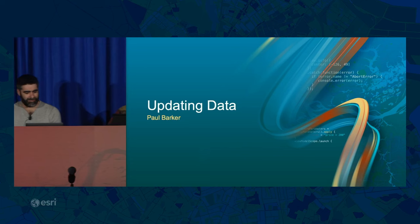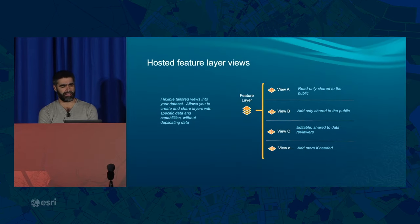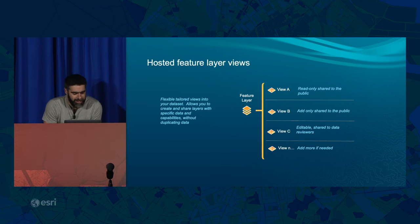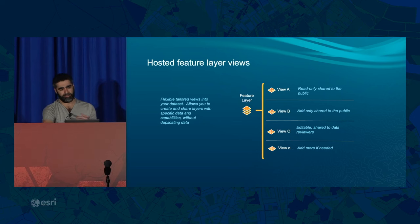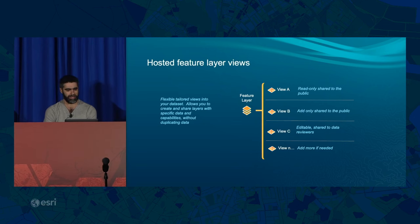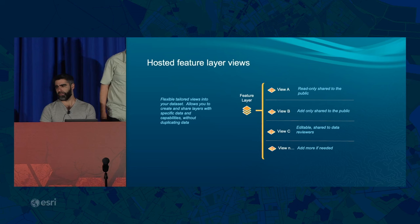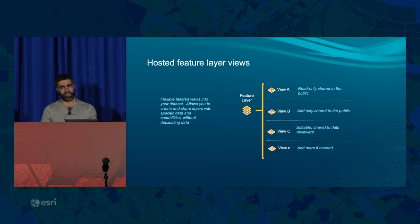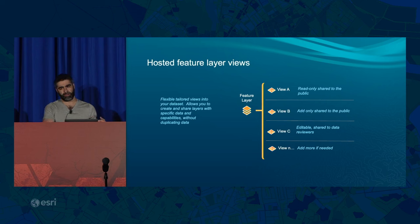Let's talk about updating data. Before jumping into that directly, I want to cover hosted feature layer views. When you publish a feature service, you can create a view from it. That view still points to the underlying table in the database — it doesn't duplicate the data, but gives a unique window into it. When you create a view, you can remove fields, apply a geographic spatial filter, or apply a SQL filter — three levels of control over what data the user sees.